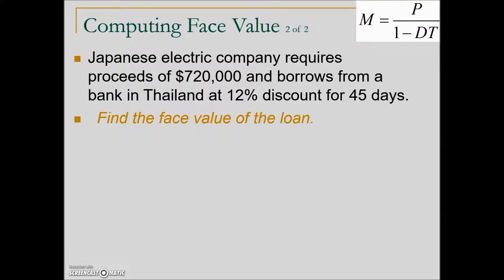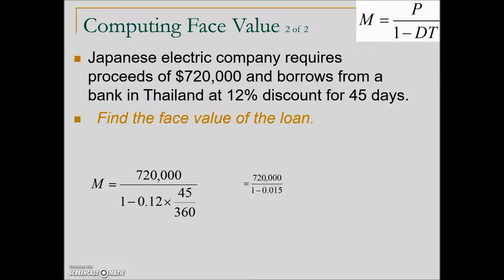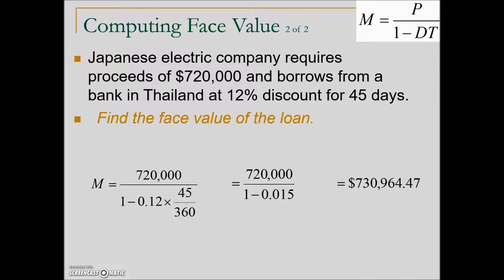They're asking us to calculate the face value, so we'll use our formula. Plugging in the given information: the proceeds of $720,000 go in the numerator, and in the denominator: 1 minus D, which is 12% as a decimal, times time expressed in years. Simplifying gives us the face value or maturity value of the discounted note. This company would have to request a maturity value of over $730,000 so that once the note is discounted, they achieve the cash needed to meet their financial needs.